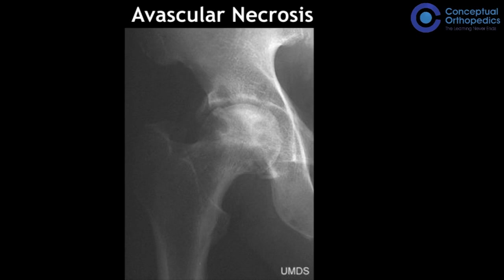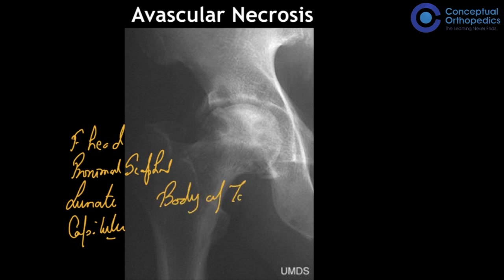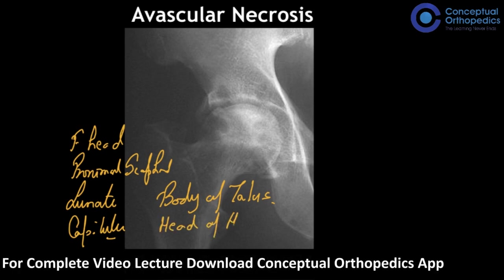For avascular necrosis, remember the important areas: the femoral head, the proximal pole of the scaphoid, the lunate, the capitellum, the body of the talus, the head of the humerus, and rarely the distal femoral condyles — seven areas in total.